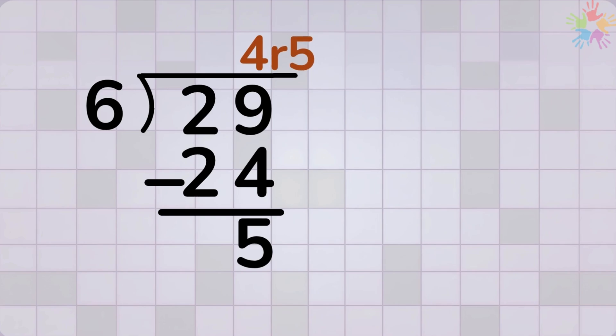So we say 4 remainder 5. 6 goes into 29 4 times with 5 left over. If you still have a number left over and nothing else to bring down, that number becomes your remainder.